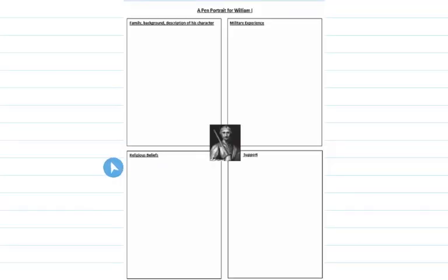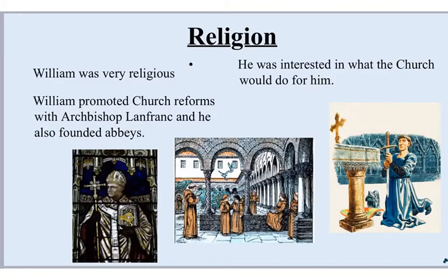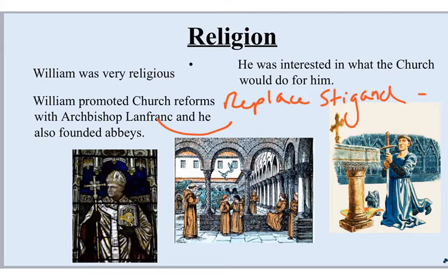Religion — obviously going in the religious beliefs box. William was very religious. He promoted church reforms with Archbishop Lanfranc, and he also founded abbeys. For extra knowledge: William appointed Lanfranc to replace a man called Stigand, who was viewed as quite corrupt — meaning dishonest, taking money for his own personal benefit. This shows how committed William was to the church. Abbeys are really big churches where monks would live. He was religious, but he also liked the fact that the church, being very powerful in 1066, could do a lot of good work for him.